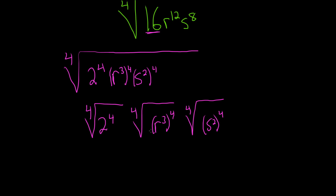Just taking the fourth root of each individual piece. The fourth root gets rid of the 4, so you just get 2 r cubed s squared. And that would be the final answer.